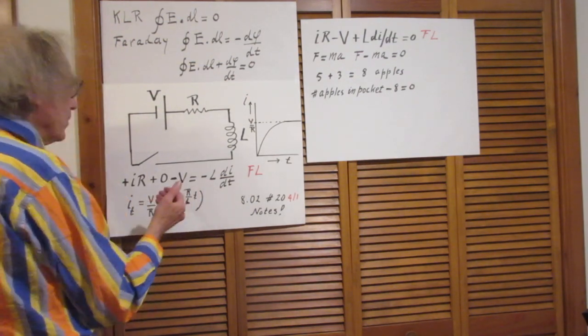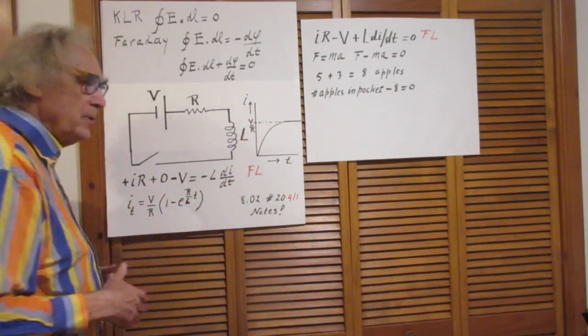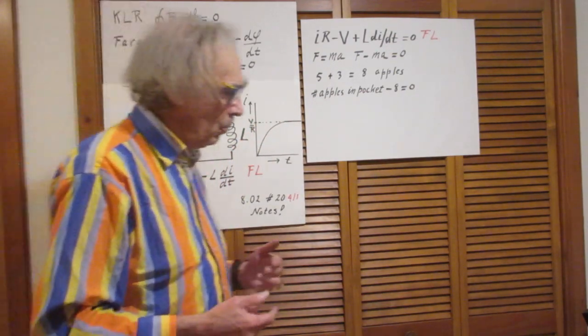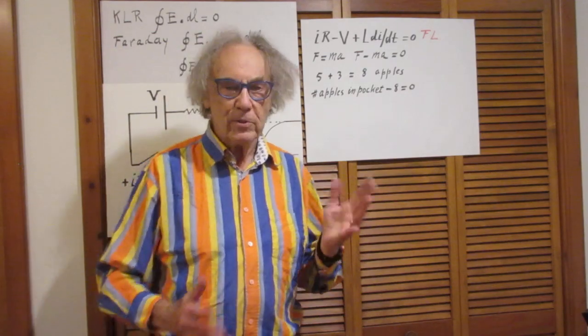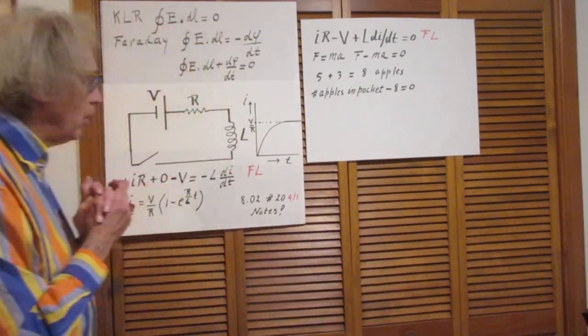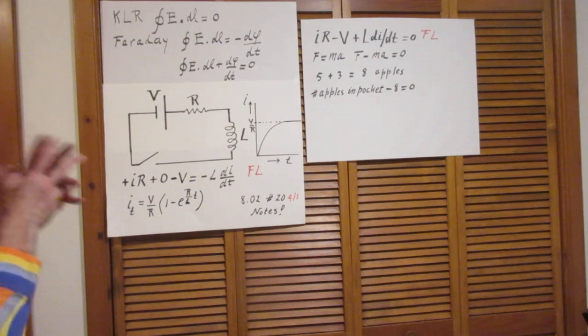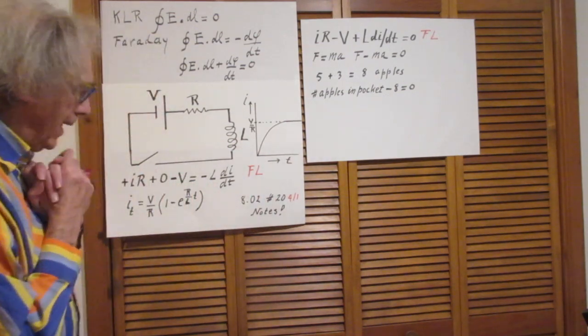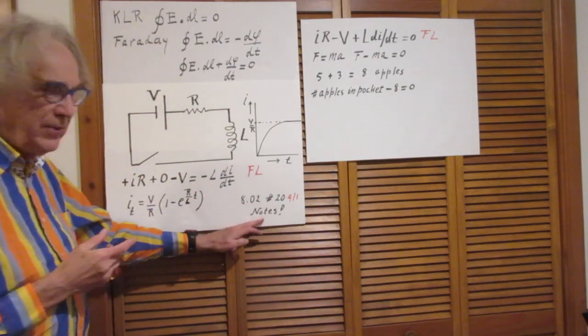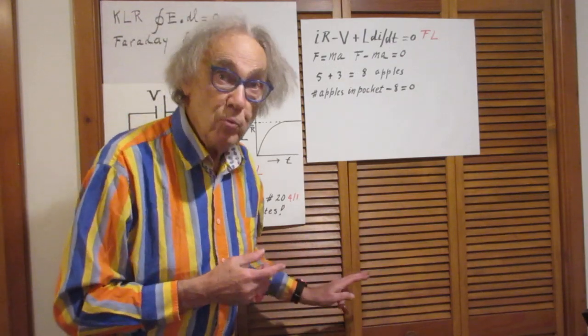So you see this differential equation is very nice. It gives you an analytical result which is completely consistent with your intuition. The current starts with zero, builds slowly up, and ultimately reaches the value V over R. It's all explained in my lecture number 20. Read the notes. I repeat that. Read the notes.